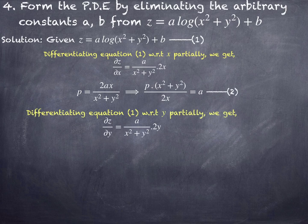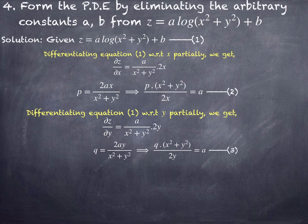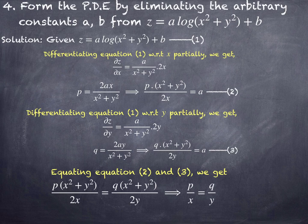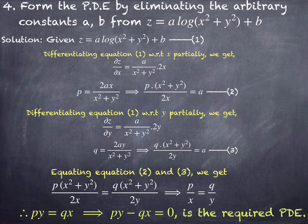Since ∂z/∂x is p, simplify for a: a equals p·(x²+y²)/(2x). Differentiating equation 1 with respect to y gives ∂z/∂y equals a·(2y/(x²+y²)). Simplifying for a gives a equals q·(x²+y²)/(2y). Since the right-hand sides of equations 2 and 3 are equal, equating them: p·(x²+y²)/(2x) equals q·(x²+y²)/(2y); (x²+y²) and 2 cancel, giving p/x equals q/y. Therefore the final answer is py minus qx equals 0.